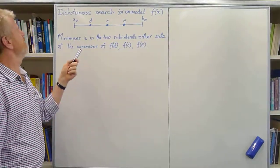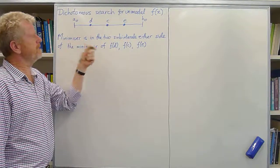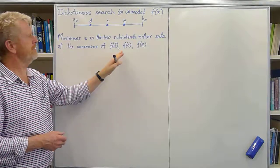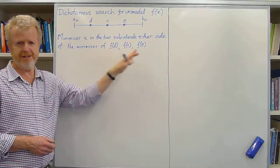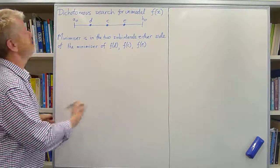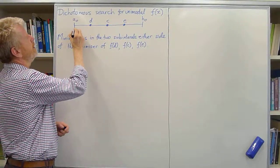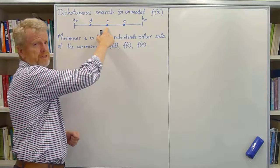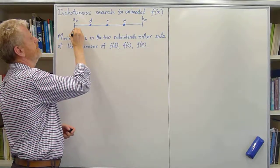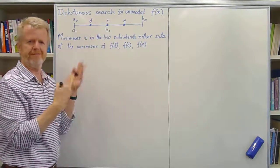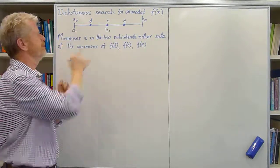And then what we know is that wherever the minimum is, it must be in the two subintervals which are either side of the smallest one of these. So for example, if f of d is the smallest, then the minimum has to be in this interval from a0 to c. So the next iteration we might call that a1 and b1 because we know the minimum now lies in there.